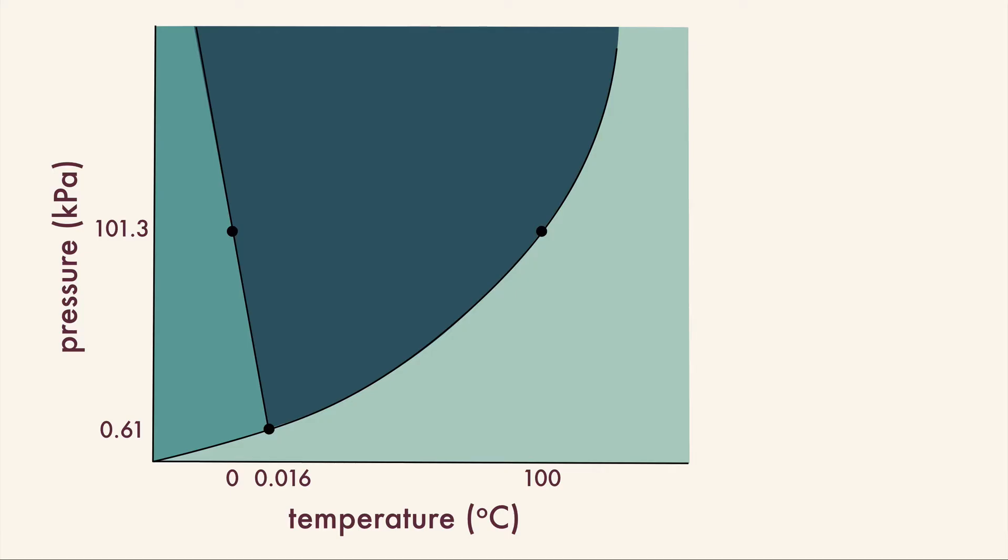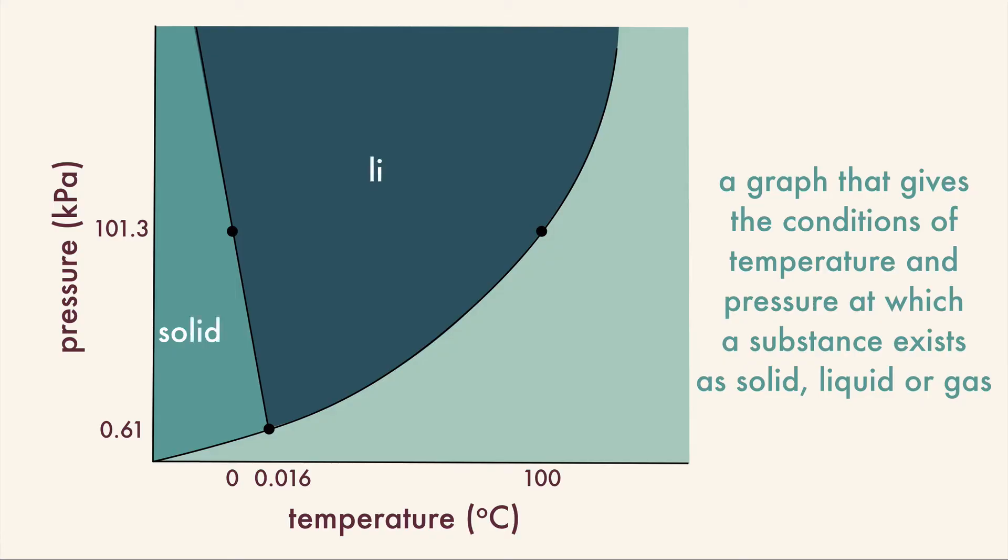This is a phase diagram for water. A phase diagram is a graph that gives the conditions of temperature and pressure at which a substance exists as a solid, liquid, and gas, also known as vapor.